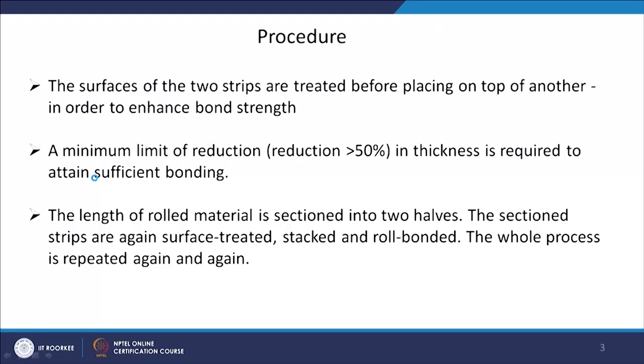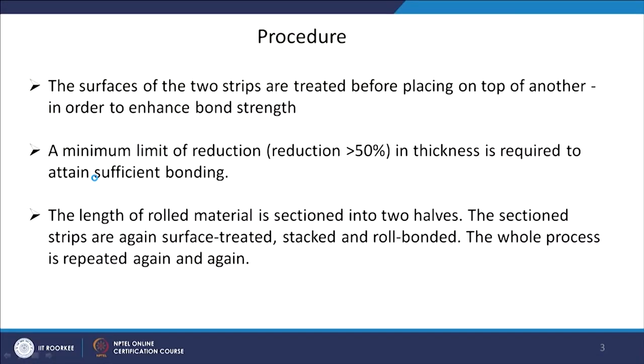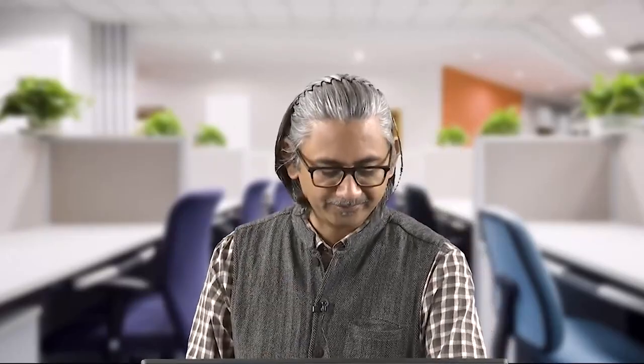The surface of the two strips is treated and then placed one over another. In each cycle the typical reduction aimed for is more than 50 percent. This 50 percent reduction in thickness is needed to attain sufficient bonding. Bonding between the two layers occurs through the deformation — through the flow of material — creating a bond. Every time the length increases, you can section into two halves, place one over another, and again do the deformation process at a temperature lower than the recrystallization temperature with reduction more than 50 percent.